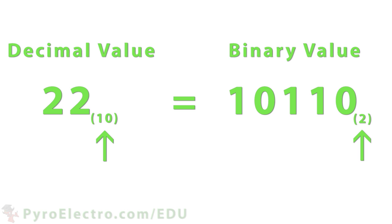For a quick example, the two numbers on the screen represent the same value, twenty-two. But each number is displayed in a different number system, decimal, represented by the subscript ten in parentheses, and binary, represented by the subscript two in parentheses.